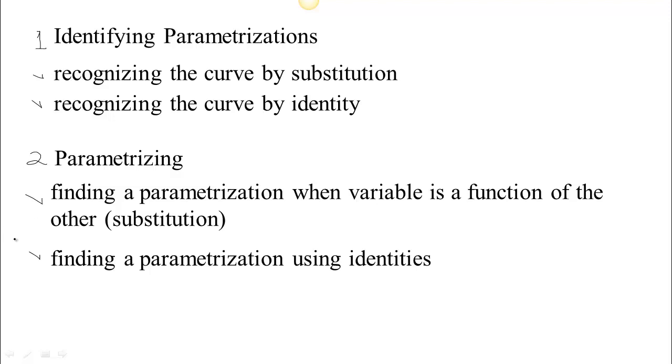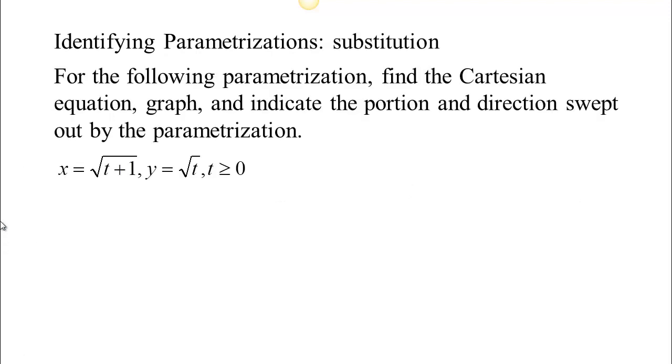So start off by looking at how do you identify a parametrization. Here's an example. We have this parametrization where our location in the plane, XY, both X and Y are functions of T. T is the parameter. Now we want to figure out, if X changes this way and Y is changing at the same time according to this equation, what's the relationship between X and Y? One thing that we could do is to solve one of the equations for T and then substitute it into the other.